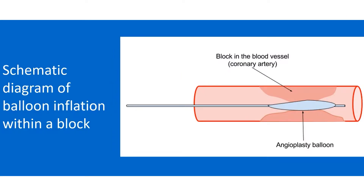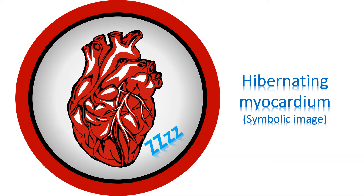In coronary angioplasty, blocks in blood vessels of the heart are removed using small tubes known as balloon catheters introduced through the blood vessels of the groin or wrist. In coronary bypass surgery, the blocked blood vessels are bypassed in a surgery which involves opening up the chest fully or partially.